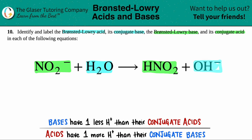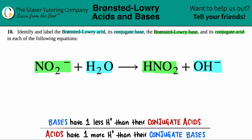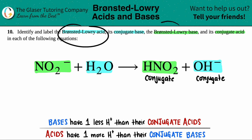The next thing we're going to do is get rid of the conjugate confusion. Just know that conjugates are always going to be on the product side — they're what you make from your acid and base. So both products have to be a conjugate something. On the flip side, the actual Bronsted-Lowry acid and base are always going to be on the reactant side.